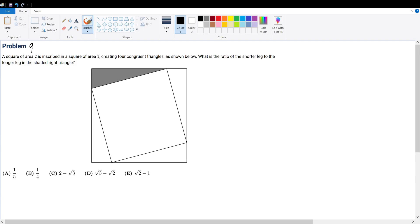Problem 9. A square of area 2 is inscribed in a square of area 3, creating four congruent right triangles as shown. What is the ratio of the shorter leg to the longer leg of the shaded right triangle?